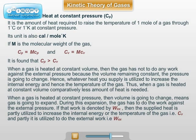Hence, Cp is always more than Cv. If Wex is the amount of external work done by the supplied heat at constant pressure and Cv is the heat used to raise the temperature of the gas through one degree Celsius or one degree Kelvin, then Cp can be given as Cp equals Cv plus Wex.